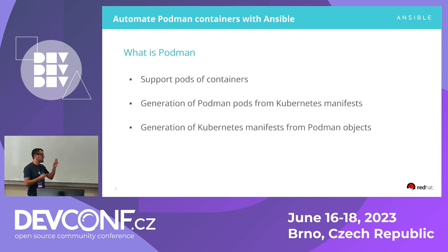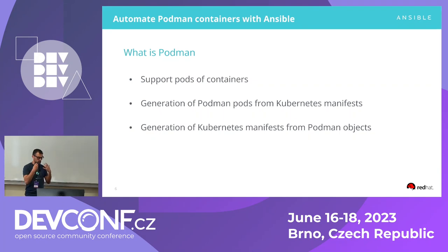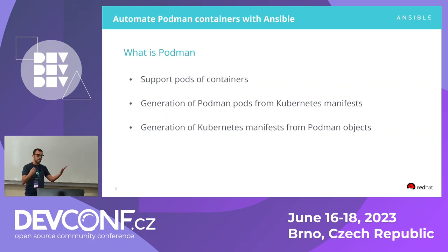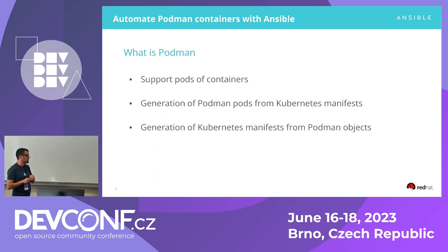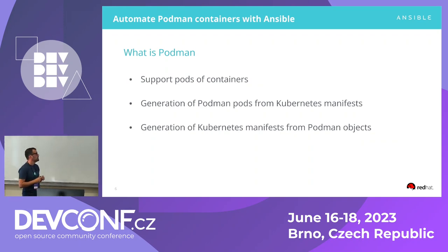Podman supports pods for containers. In Kubernetes, the single unit of execution is a pod, not the container itself. When you want containers to share lifecycle, storage, and networking, you put them into a pod. That's actually what gives Podman its name — it's Pod Manager. You can create a pod and put containers in it to share networking or storage for communication between them. You can also generate Podman pods from Kubernetes manifests by running a command, and the other way around — generate Kubernetes manifests from Podman objects.